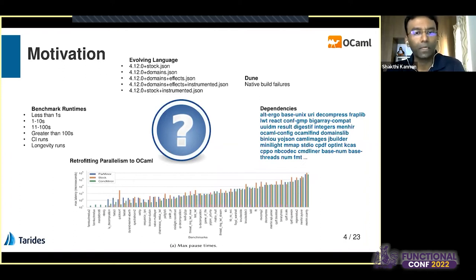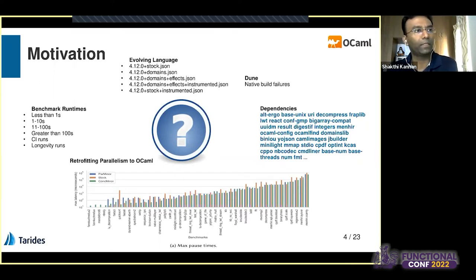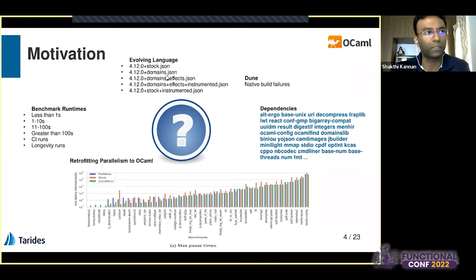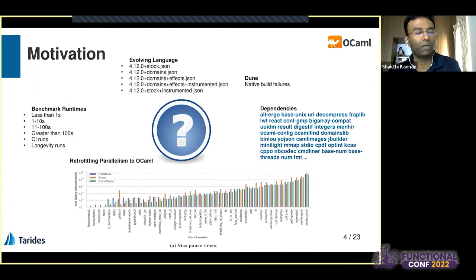It was a very big PR, and we expect to have a 5.0 release of OCaml in June this year. From running sequential to parallel benchmarks, there have been a lot of changes — the language has evolved and different variants of the OCaml compiler have been developed. For example, you have 4.12.0 stock representing core OCaml development, then 4.12.0 domains representing the parallelism implementation, and an effect syntax which some academic systems like to use. So the language is evolving, making it a moving target for benchmarking.